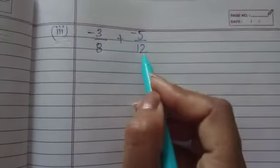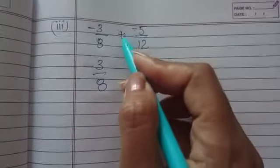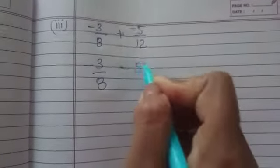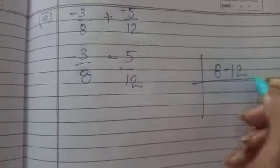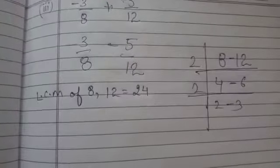Part 3 is minus 3 over 8 plus minus 5 over 12. One thing beta, two signs cannot come together. What we will do? Multiply it. Plus minus minus. It will be written as this. Again we will take the LCM of 8 and 12. When we will take its LCM, you will get 24.